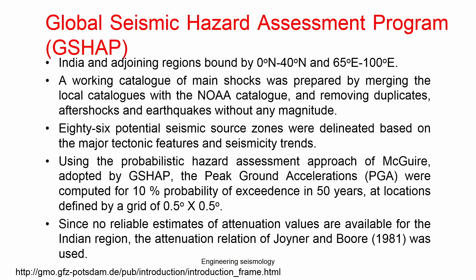Focusing on the Indian context: for India and adjoining regions, a working catalogue of main shocks was prepared by merging a local catalogue with the international catalogue, removing duplicate entries, aftershocks, and earthquakes with different magnitudes. We were told that foreshocks and aftershocks should be removed for any analysis. This removal of foreshocks and aftershocks is called the declustering process, which we will discuss at a later stage.